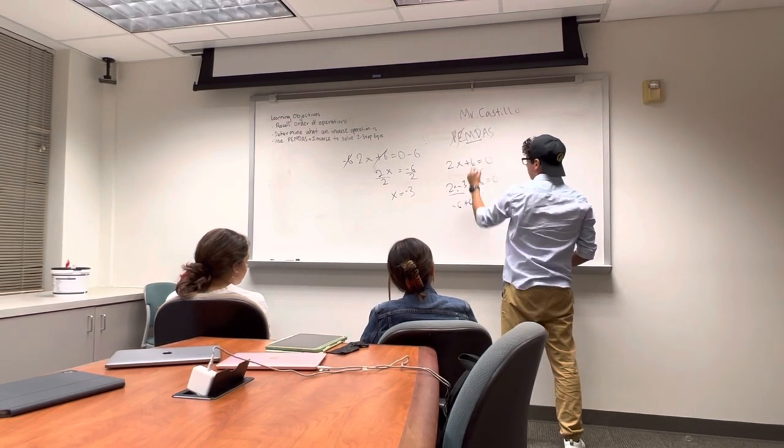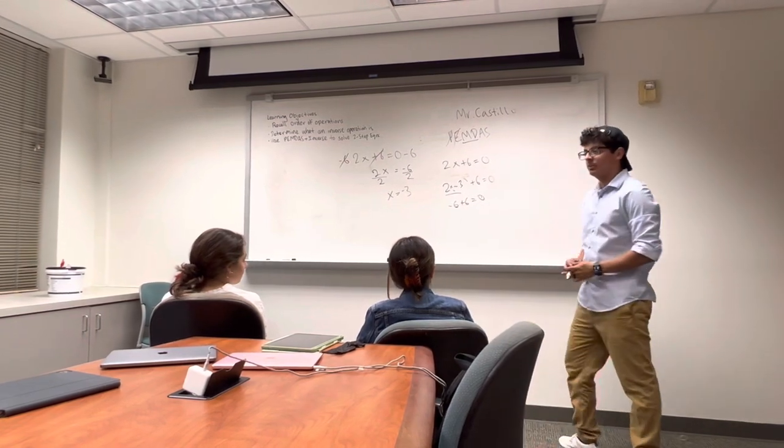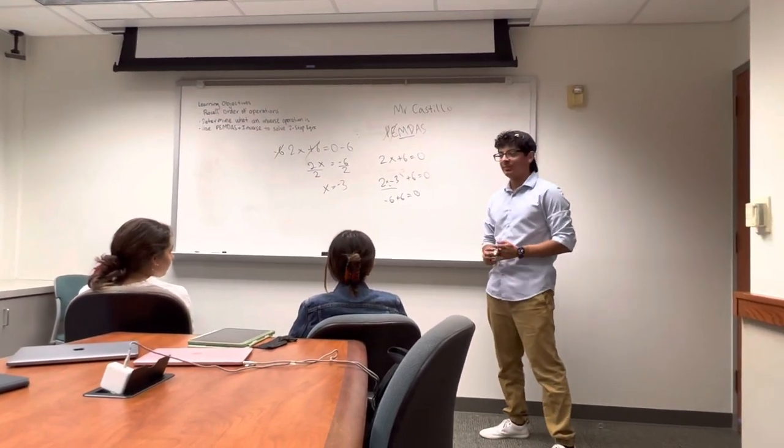And we have addition. And so now we have negative 6 plus 6 is equal to 0, which is what we have. So that's how you solve a two-step equation. Thank you, everyone.